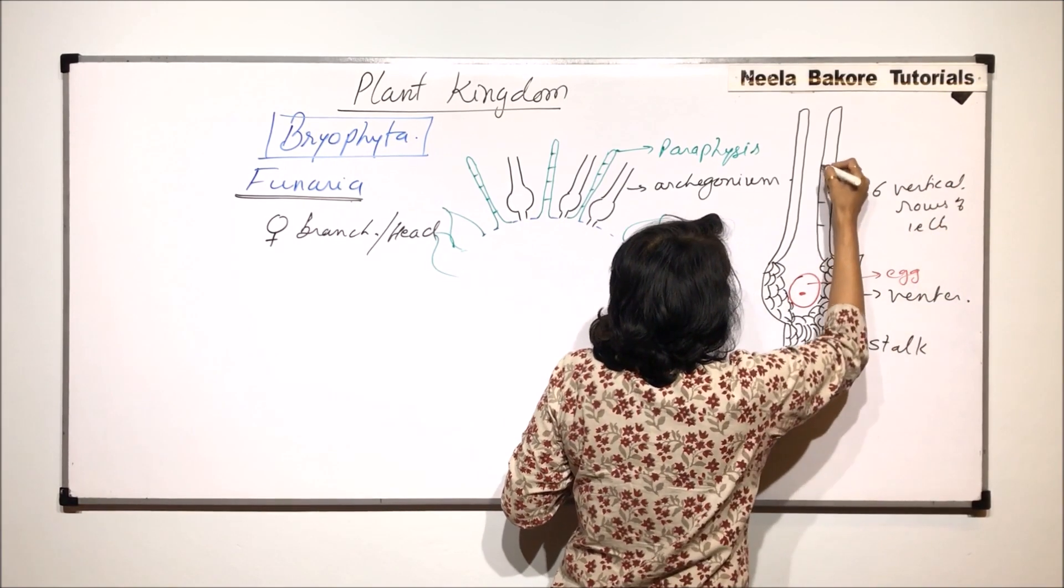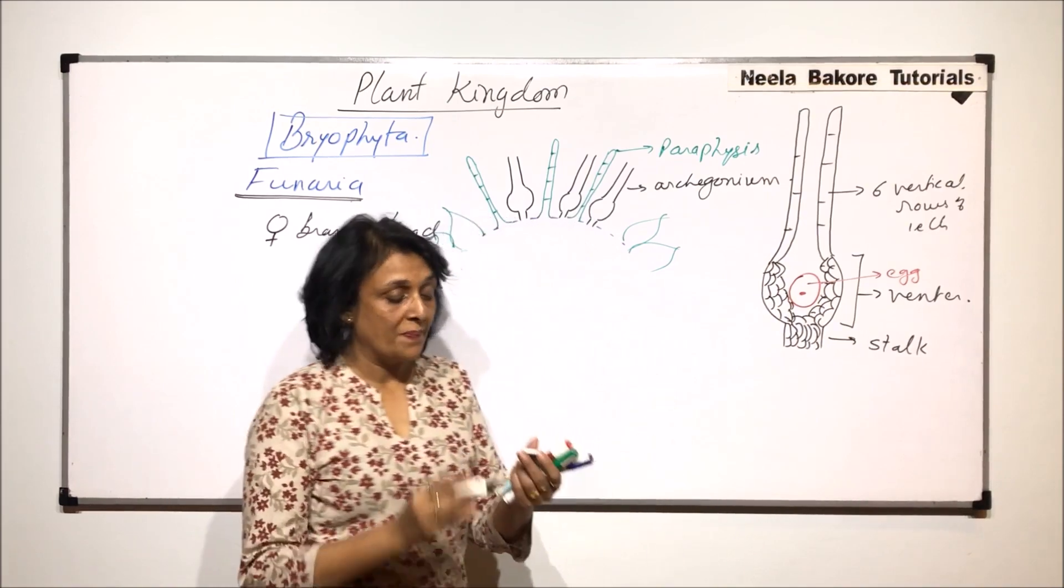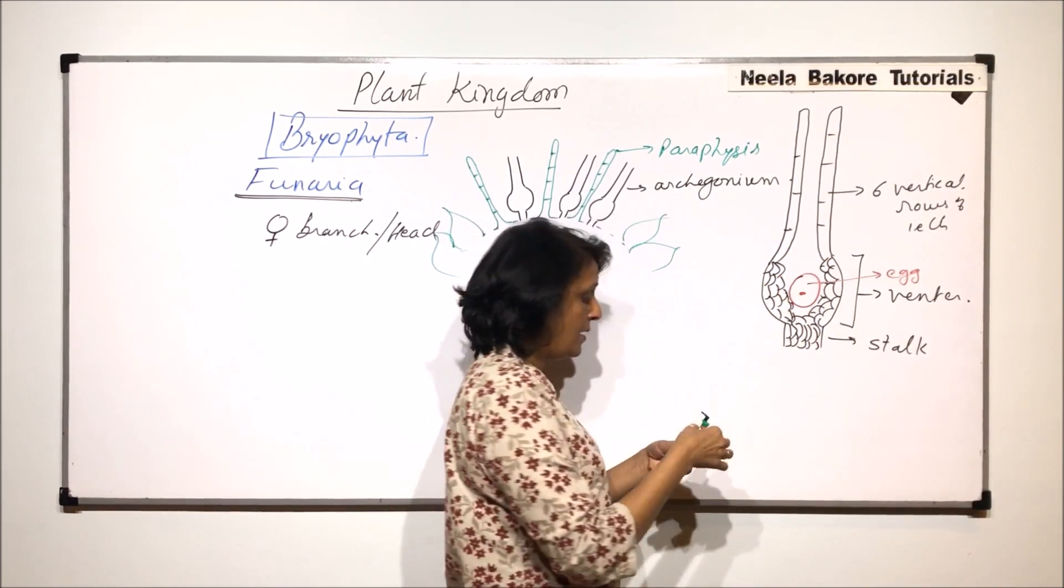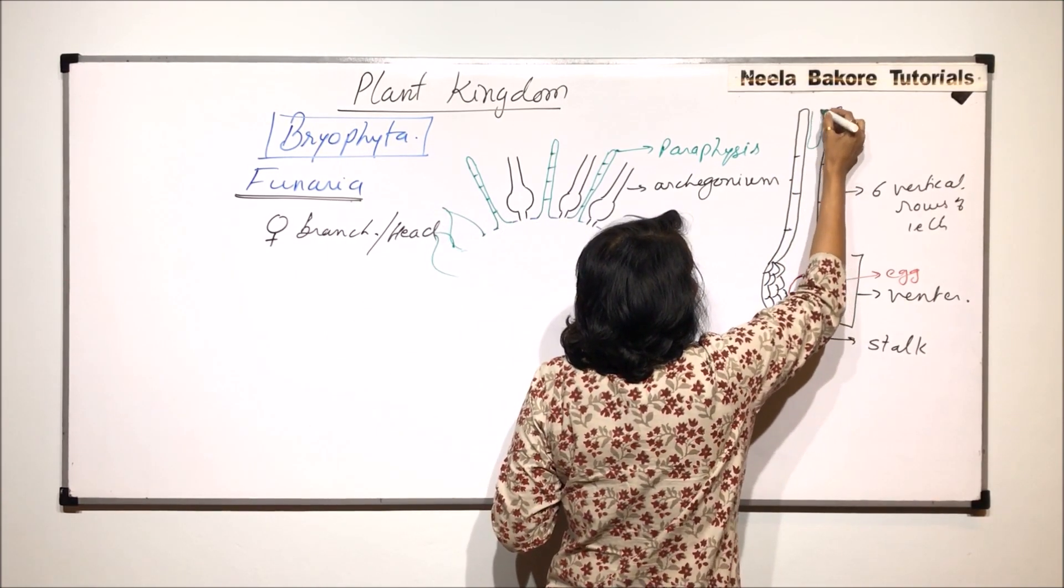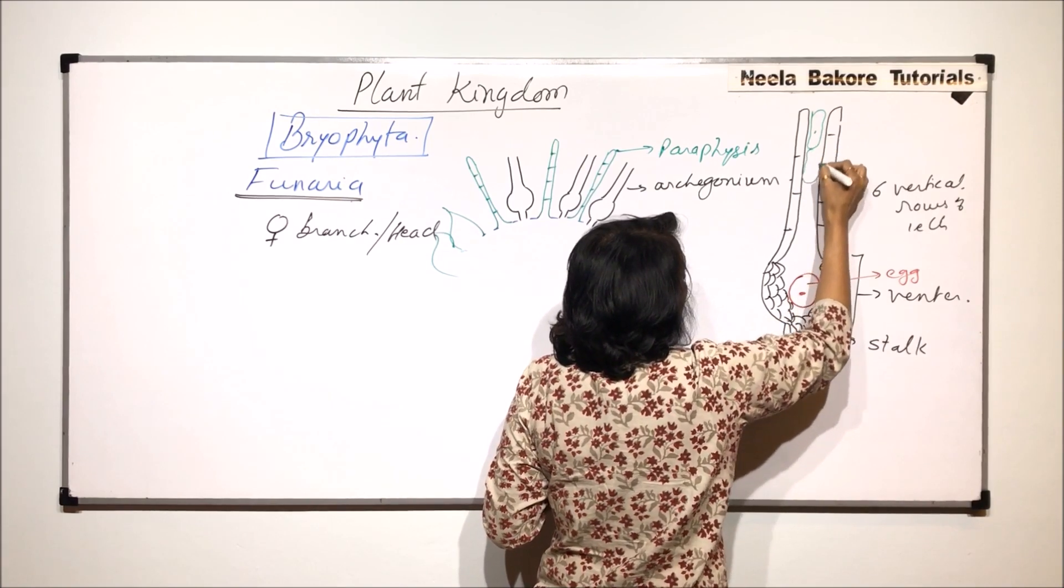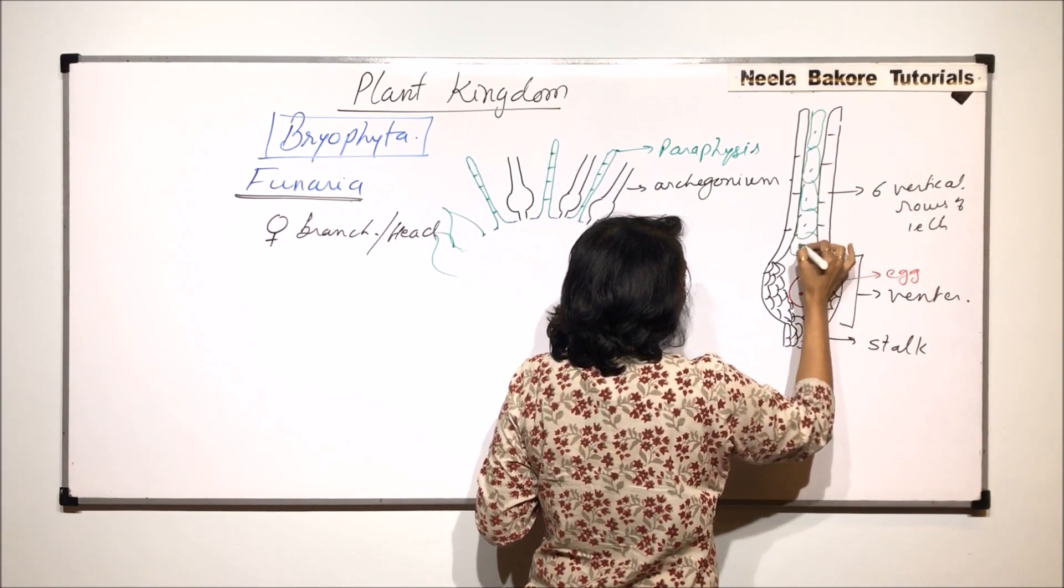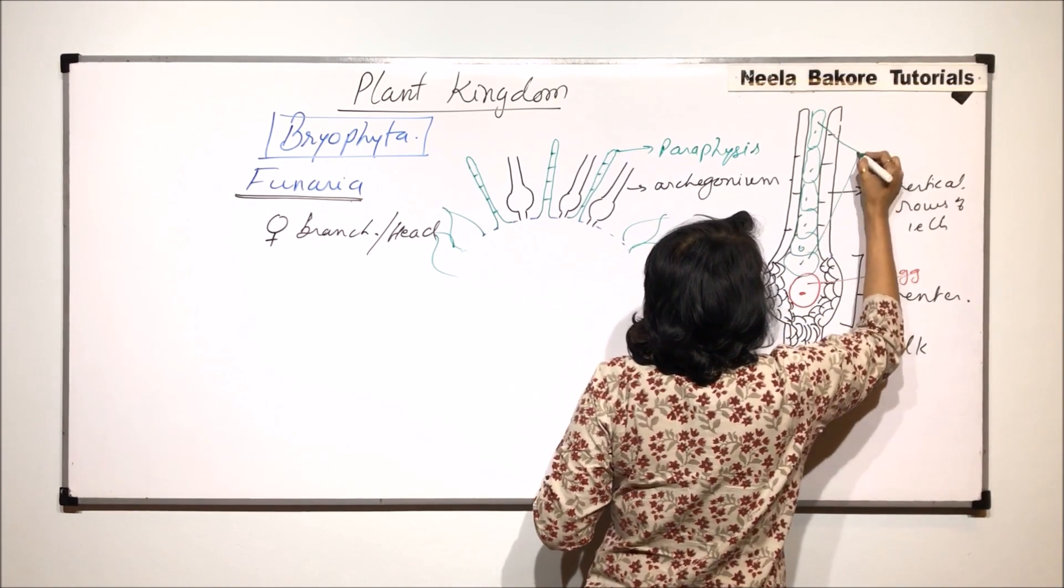So here there are six vertical rows of cells. So these cells are going to be like this. But they are arranged in six vertical rows. The canal that means this space in the middle is filled with cells again. And these cells are, their number is also fixed. Two, three, four, five and six. So these six cells which we have drawn, they are actually the canal cells.